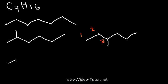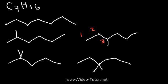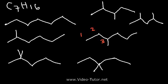Now let's go down to five carbons, where we need to add two carbons. We can add two carbons on carbon 2 or on carbon 3 — we can't add it to carbon 4, that's the same as carbon 2. Still using five carbons, we can put a methyl on carbon 2 and a methyl on 3, or a methyl on 2 and a methyl on 4 — those will be different. Moving to a four carbon chain, the only way to add three carbons is to put two on carbon 2 and one on carbon 3.